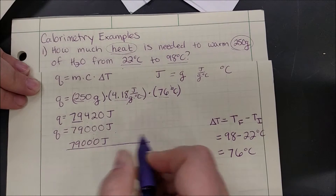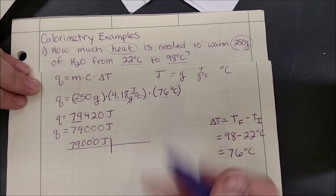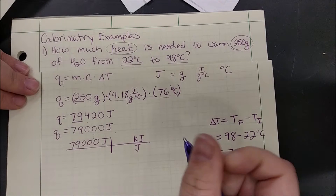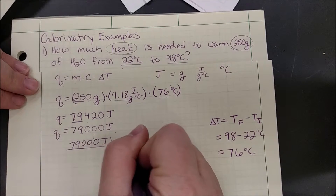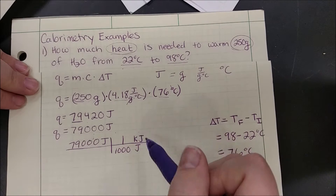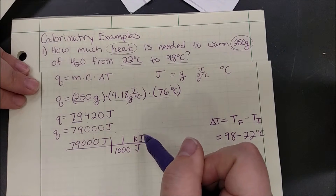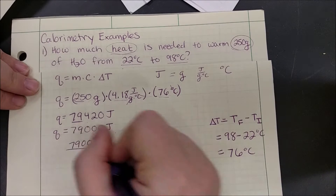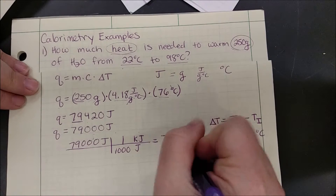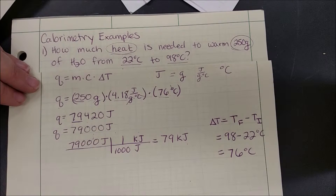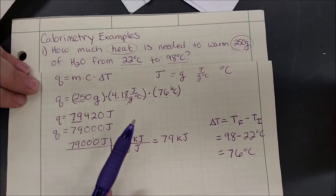If we took 79,000 joules and wanted to convert to kilojoules — just to show you what it would look like — there are 1,000 joules in 1 kilojoule, just like 1,000 grams in 1 kilogram or 1,000 meters in 1 kilometer. It's just the relationship for kilo. So 79,000 divided by 1,000 is 79 kilojoules. That's our first example — a straightforward calorimetry or specific heat equation.